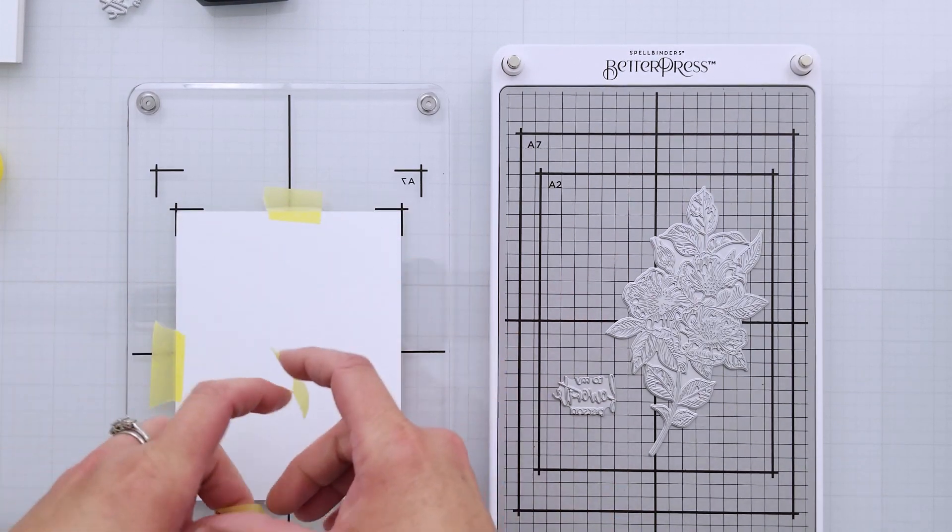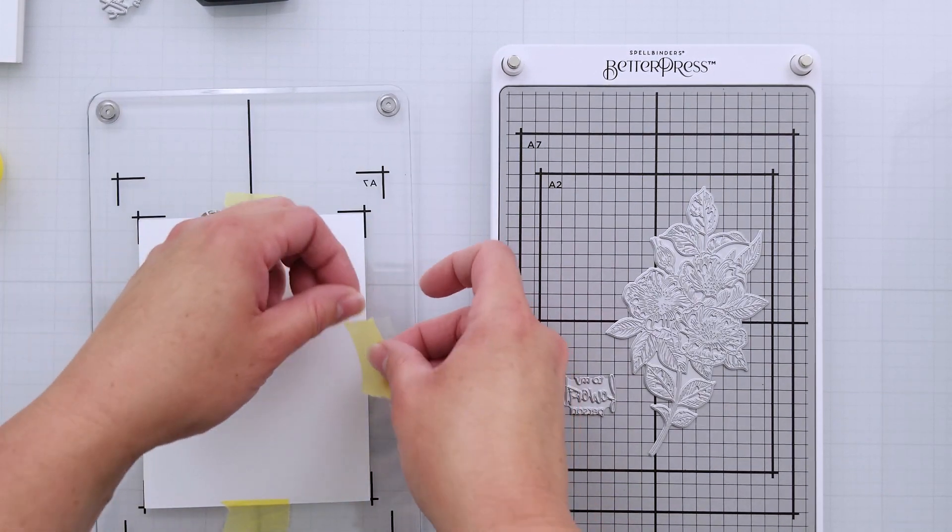And the magnetic insert has guidelines for both A2 and A7 cards so you can position everything exactly where you want it. Here I'm placing my card panel on the platen within the guidelines for the A2 sized panel. And I'm just taping it down on the four sides using my Best Ever Craft Tape.